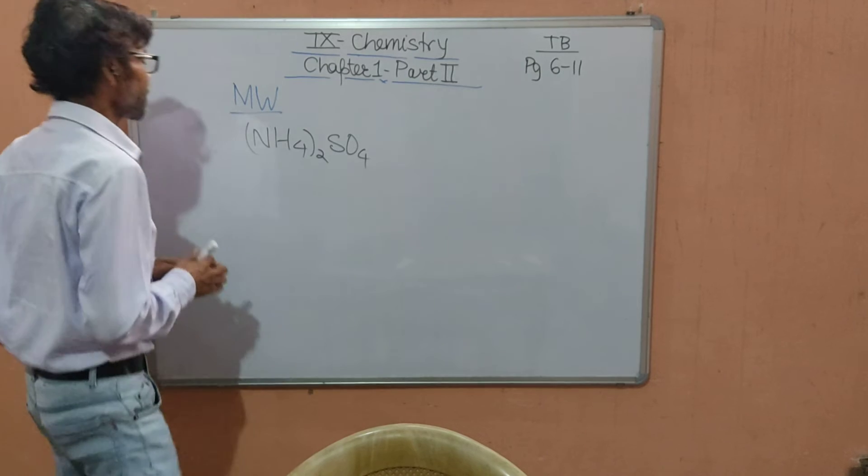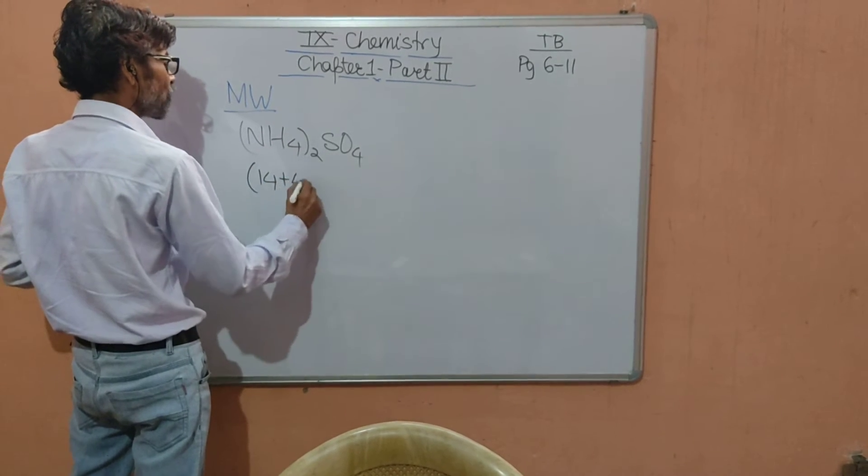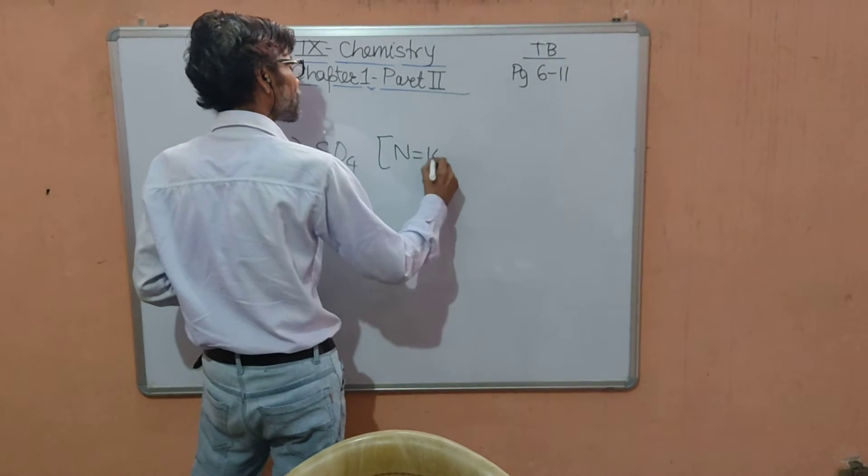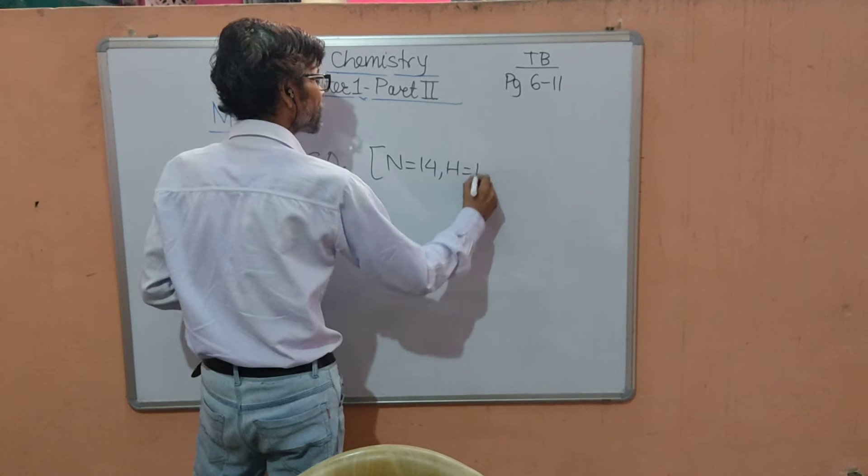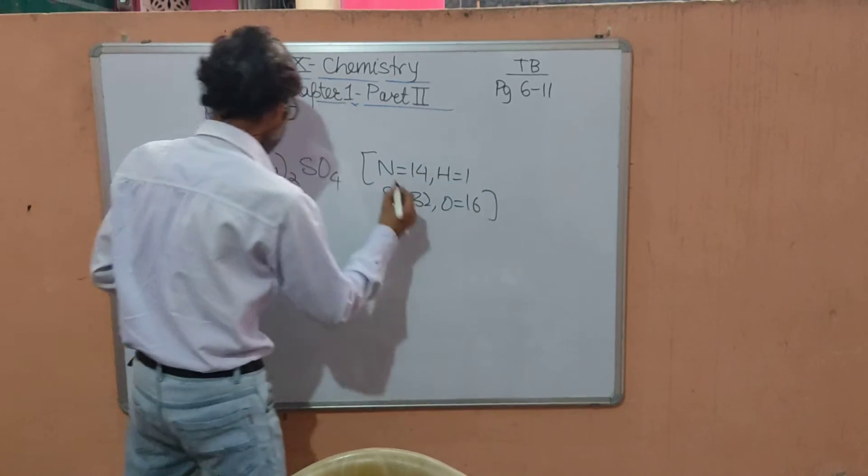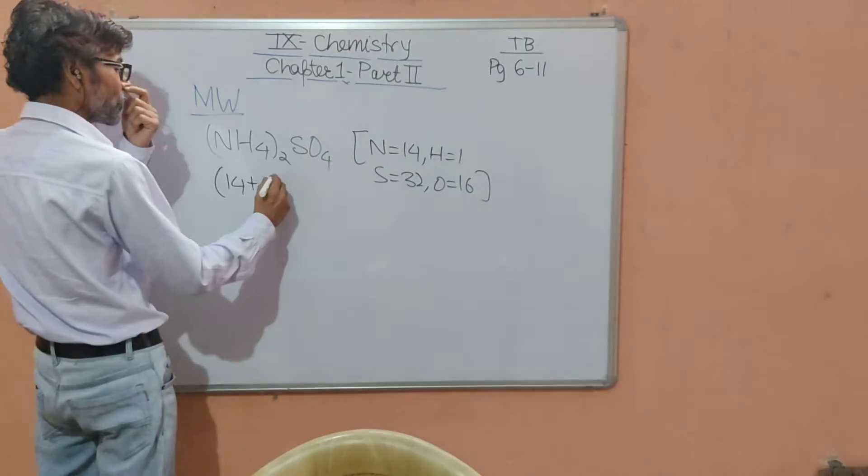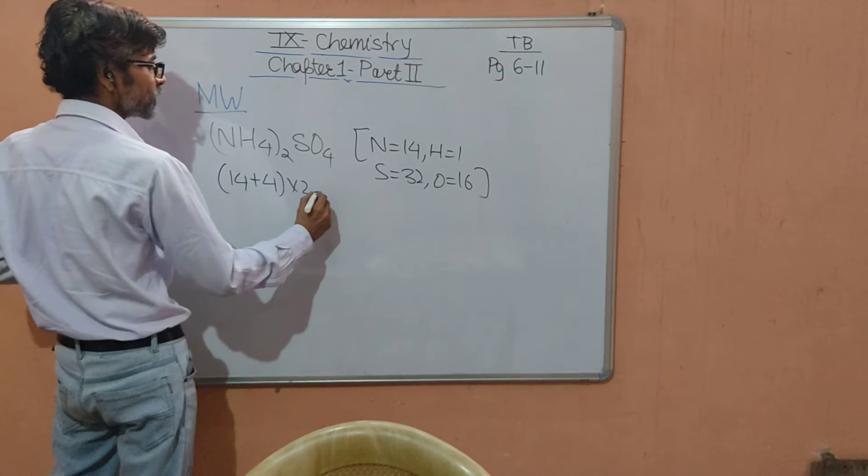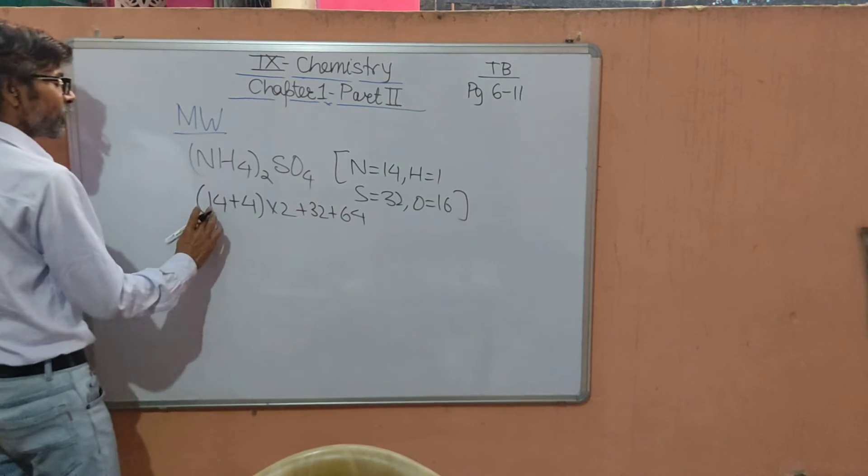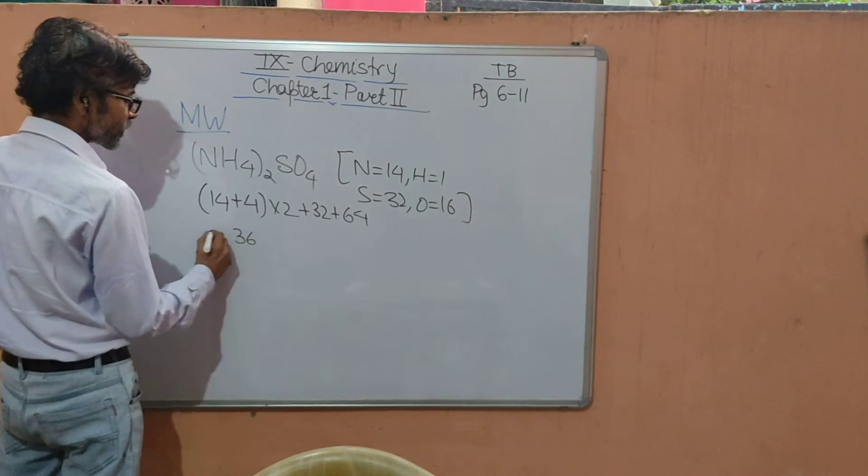To find this molecular weight, we calculate this bracket full together. Nitrogen 14 and hydrogen 1, sulfur 32, and oxygen 16. So according to the data given, nitrogen 14 plus hydrogen 1 times 4, then multiplied by 2, plus sulfur 32, plus oxygen 16 times 4 equals 64. 14 plus 4 is 18, 18 times 2 is 36, plus 32, plus 64.